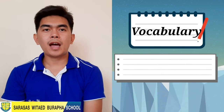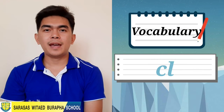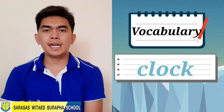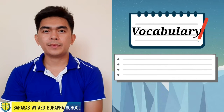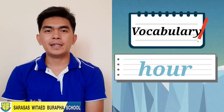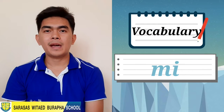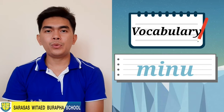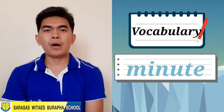Let's start with our vocabulary. Number one: clock. Spell the word clock — C, L, O, C, K — clock. Number two: hour — H, O, U, R — hour. Number three: minute — M, I, N, U, T, E — minute. Now I want you to remember these three words.